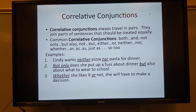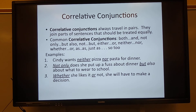Now, a new type of conjunction: correlative conjunctions. Correlative conjunctions always travel in pairs. They join parts of sentences that should be treated equally. Common correlative conjunctions are: both/and, not only/but also, not/but, either/or, neither/nor, whether/or, as/as, and just as/so/too. That is eight sets of correlative conjunctions.